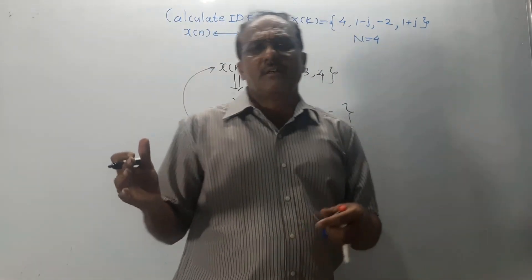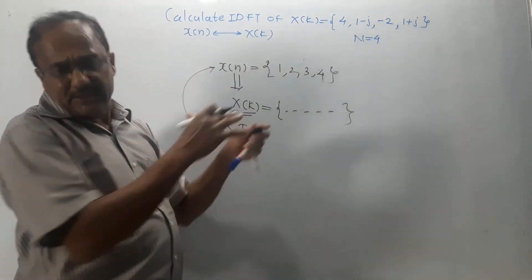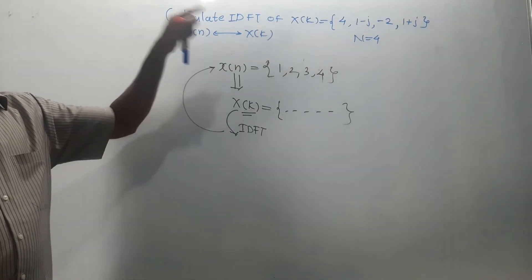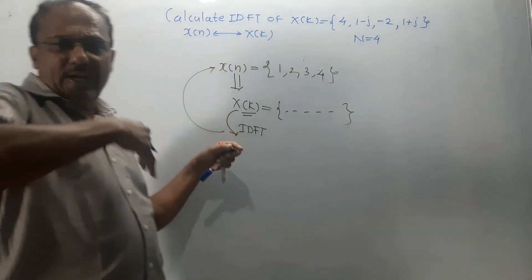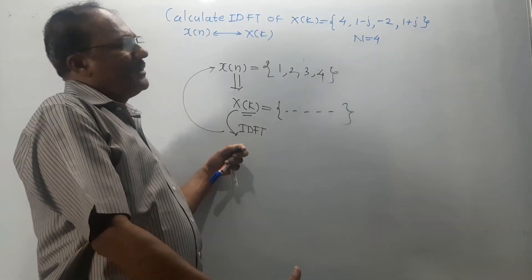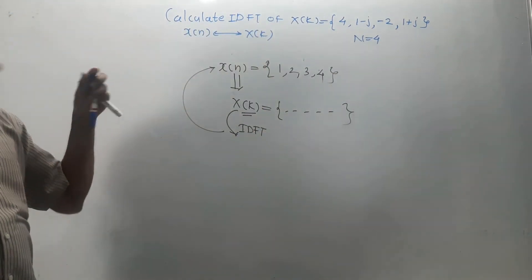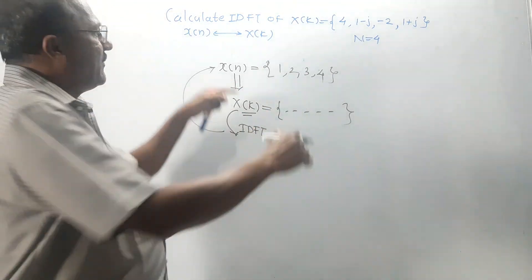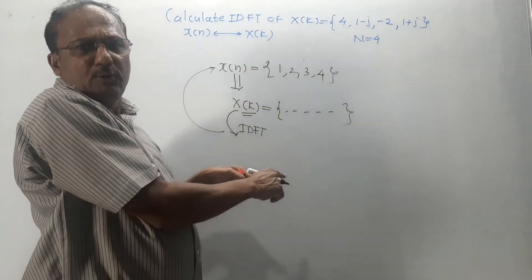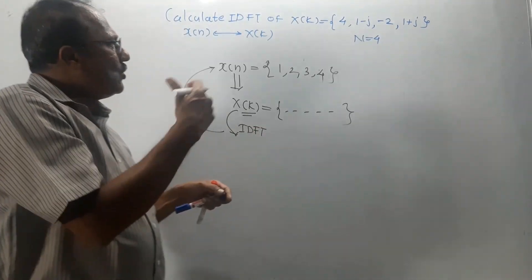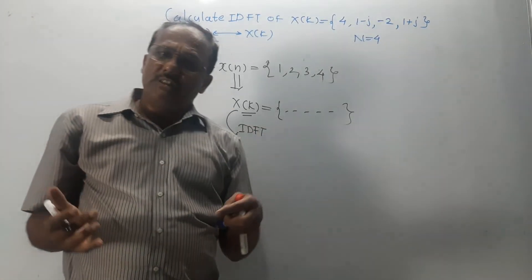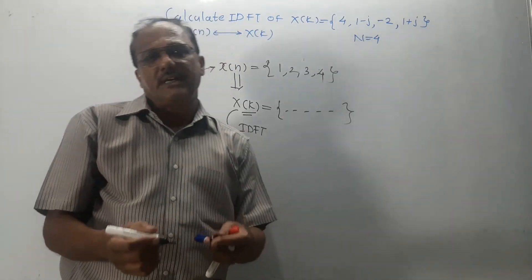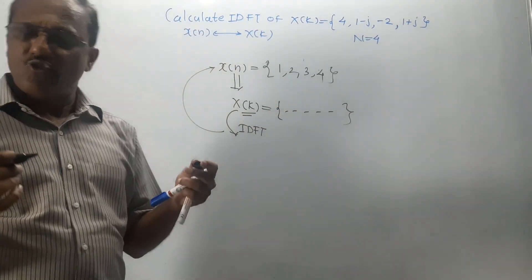Dear students, I have explained the simplest method to calculate the DFT, specifically for 4-point DFT. The method can be extended to 8-point DFT using the matrix for W8, but from the exam point of view, 4-point DFT is sufficient. That's it for today's lecture. Thanks for watching this video. If you haven't yet subscribed to the channel, do subscribe. Thank you very much.